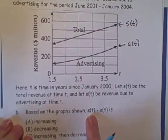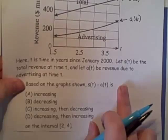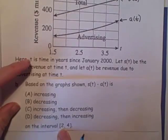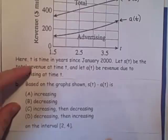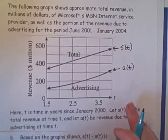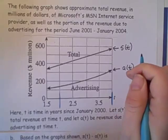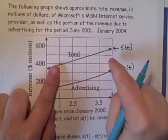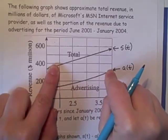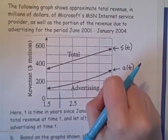Let's look at part b here. It says, based on the graphs shown, s(t) minus a(t) is increasing, decreasing, increasing then decreasing, or decreasing then increasing on the interval two to four. So let's go back up here to our graph. We're looking for the interval two to four. So here is two, over here is four. And we have to measure how the distance between our s(t) and our a(t), or our s(t) minus a(t), how is that changing? Is it increasing, is it decreasing, or does it do both?